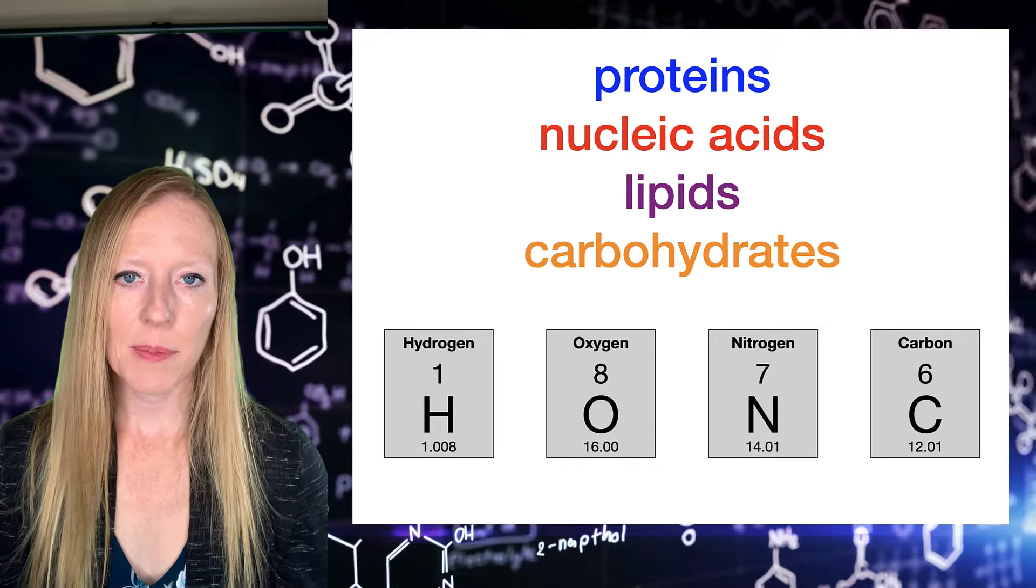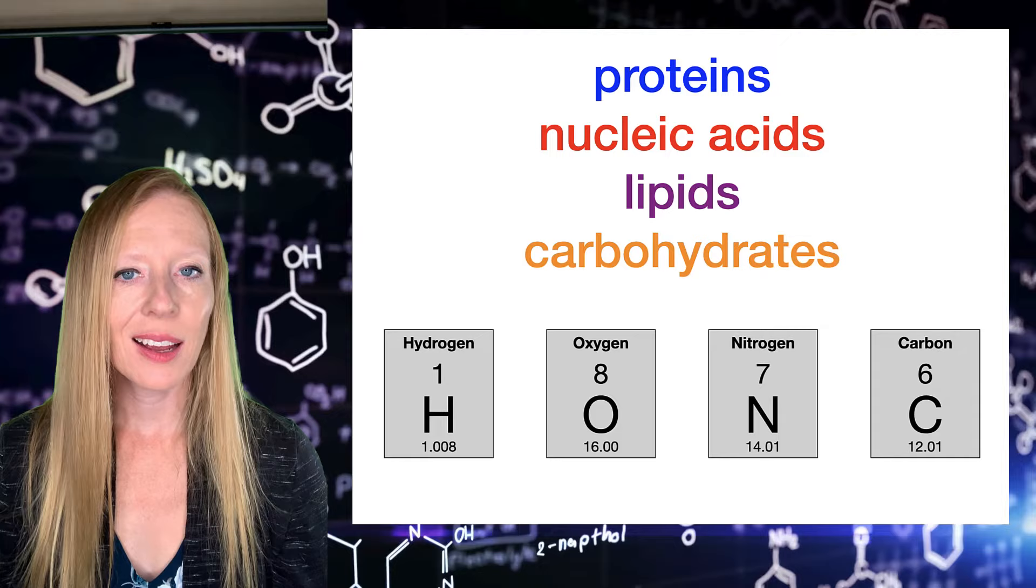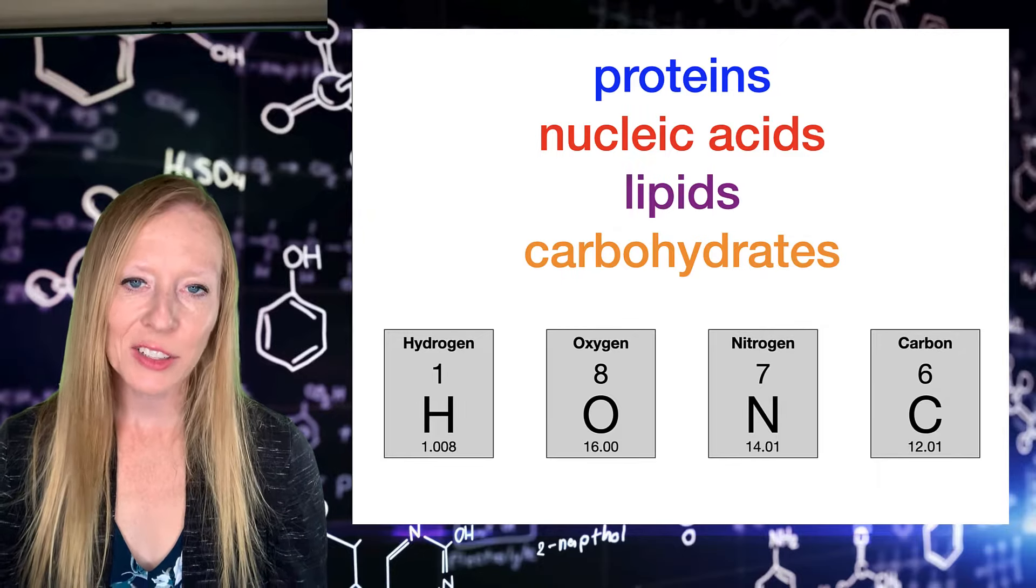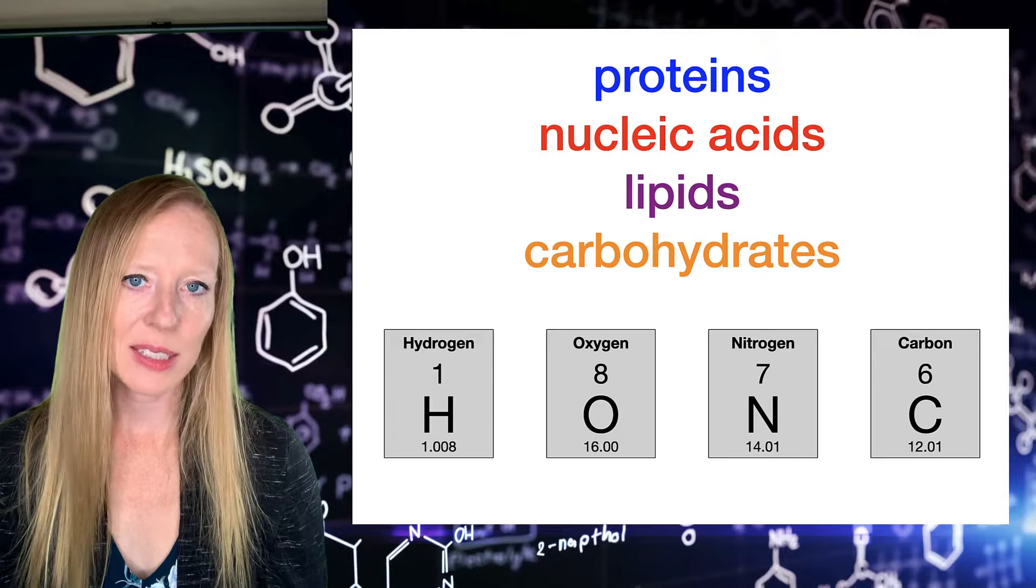All of these are made up primarily of our four favorite types of atoms: carbon, oxygen, hydrogen, and nitrogen. And we've got some phosphorus and sulfur in there sometimes as well.